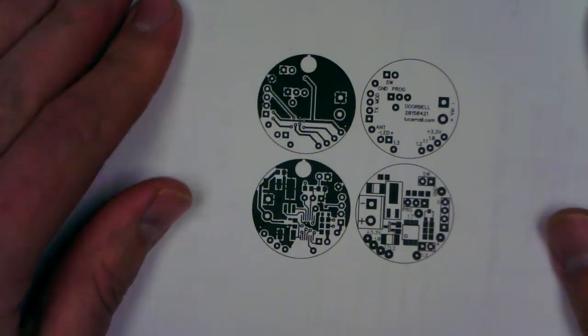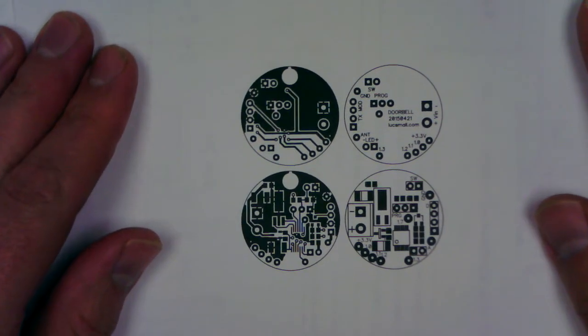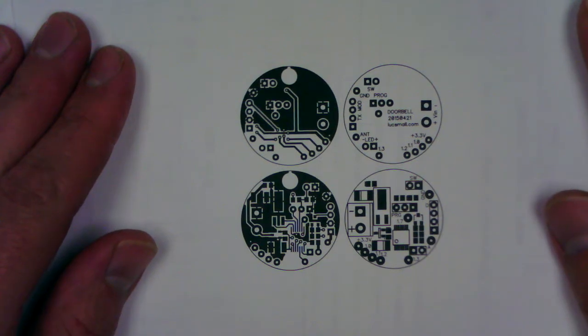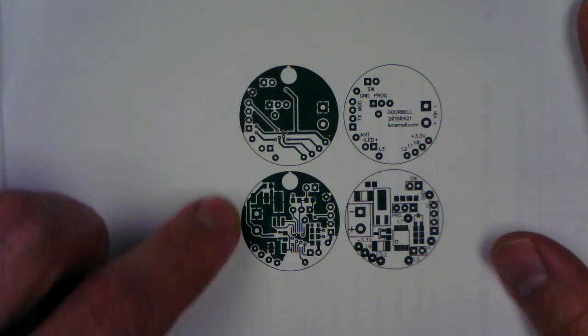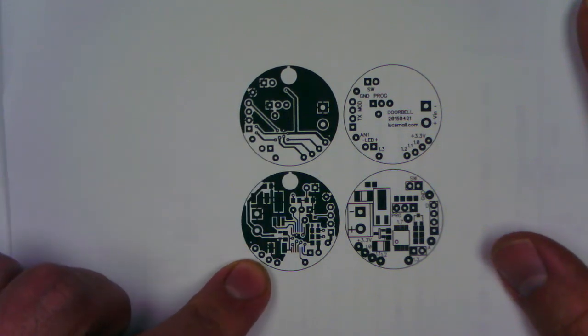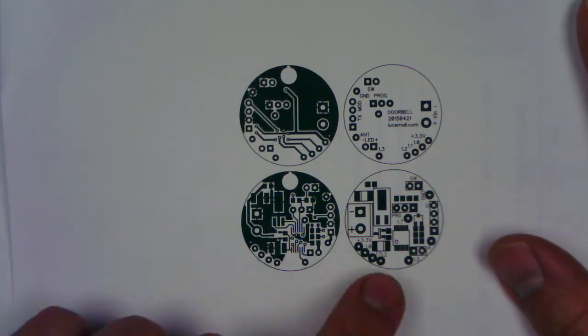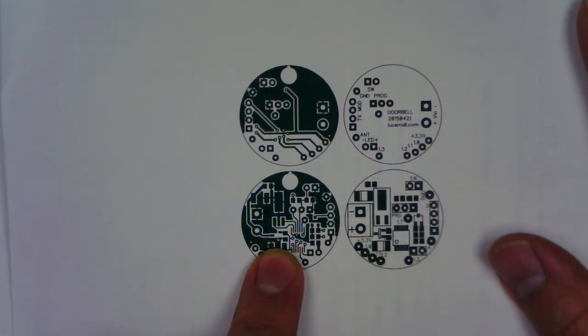This is the device at actual size. It's a 30 millimeter diameter board. That's the bottom PCB. This is the top of the PCB. It's single-sided, so all the components are on the top side.